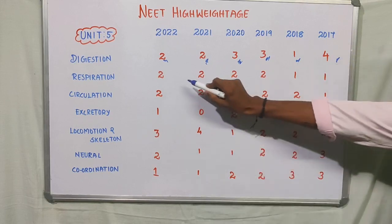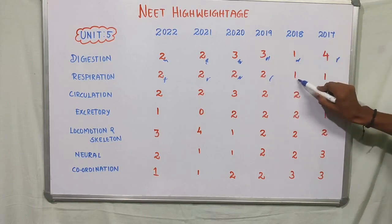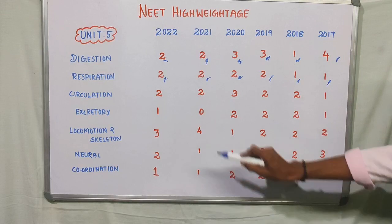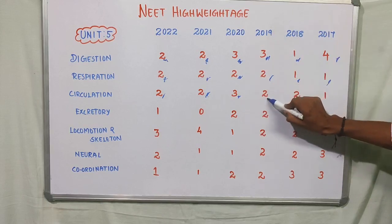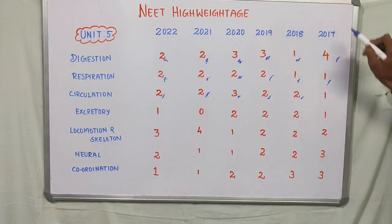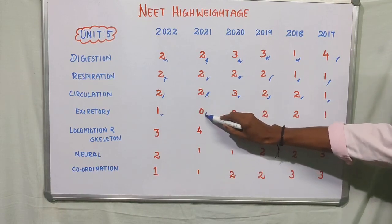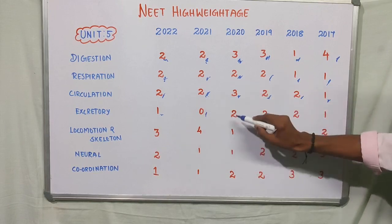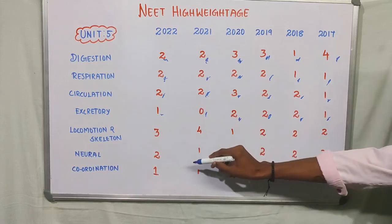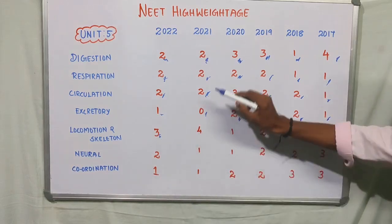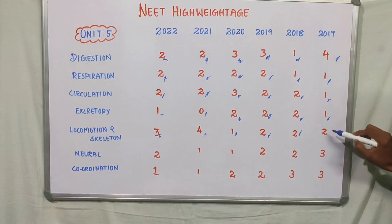Respiration: 2022 had 2 questions, 2021 had 2 questions, 2020 had 2 questions, 2019 had 2 questions, 2018 had 1 question. Circulation: 2022 had 1 question, 2021 had 2 questions, 2020 had 3 questions, 2019 had 2 questions, 2018 had 2 questions, 2017 had 1 question. Excretion: 2022 had 1 question, 2020 had 2 questions, 2019 had 2 questions, 2017 had 1 question. Locomotion and Skeleton: 2022 had 3 questions, 2021 had 4 questions, 2020 had 1 question, 2019 had 2 questions, 2017 had 2 questions.